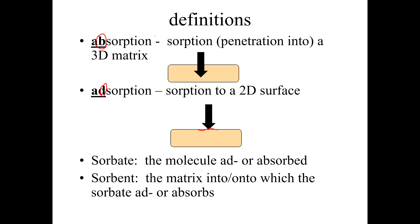The sorbate is the molecule that's being absorbed, adsorbed, or sorbed. This is your chemical, which we've been calling little 'i' all the way through. The sorbent is the matrix into or onto which the sorbate is going to sorb.